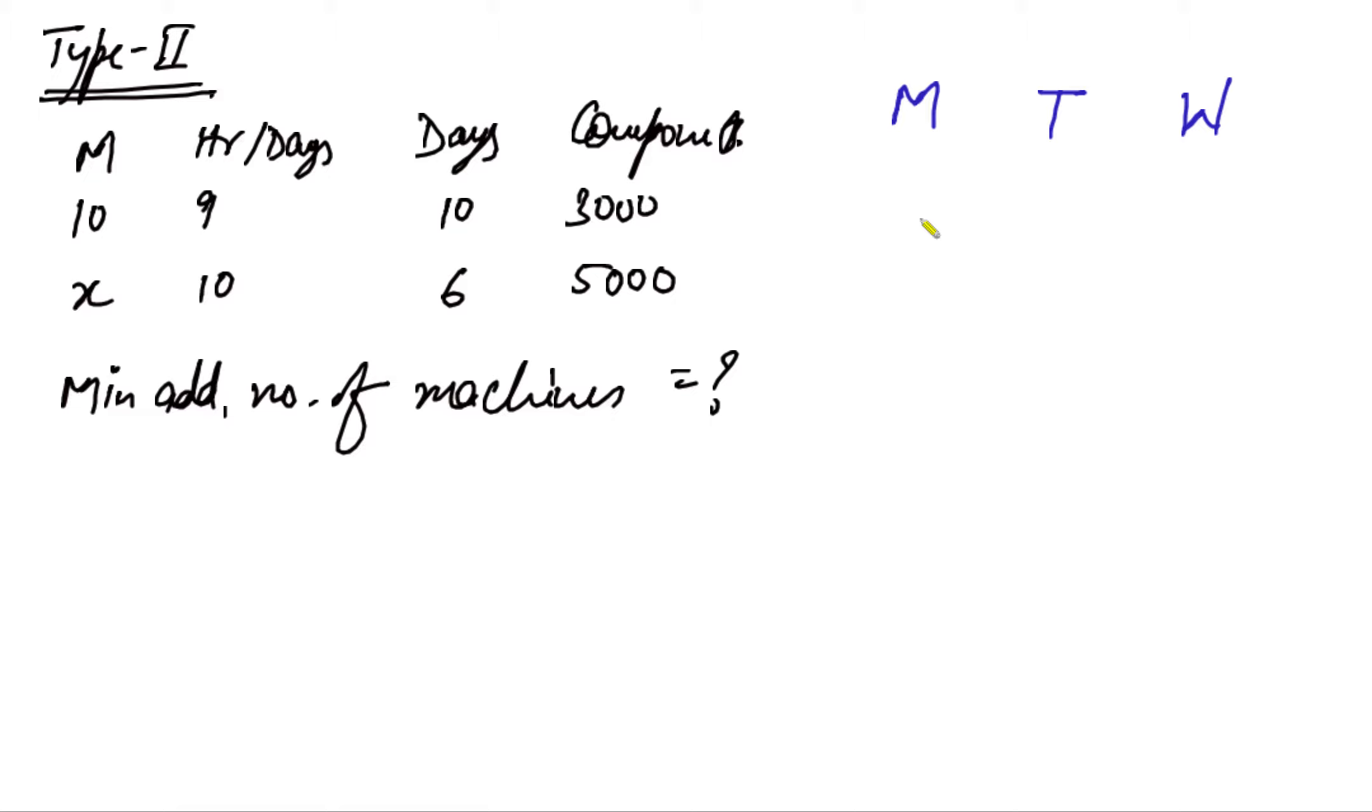We see that there is a direct relationship between manpower and work. By direct relationship, I mean that greater work requires greater manpower or machine power, and less work requires less machine power. Therefore, M is directly proportional to W.